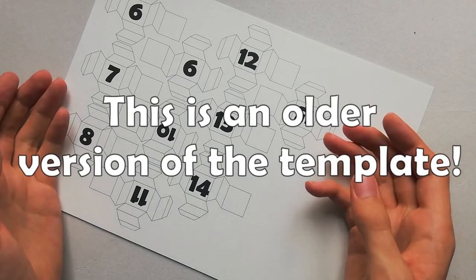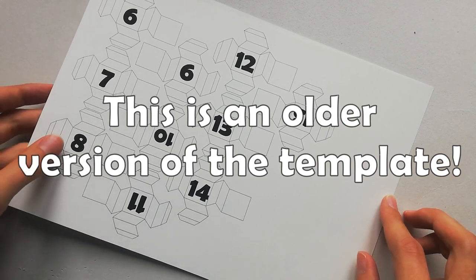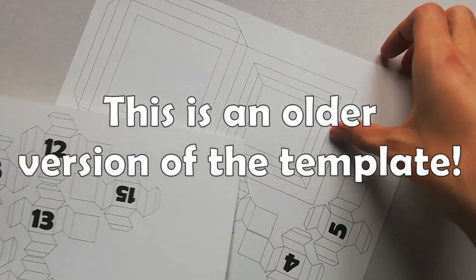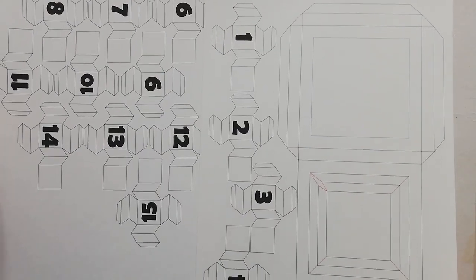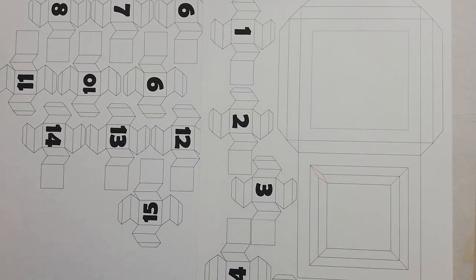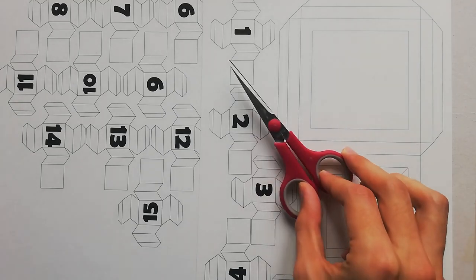I'd recommend you printing the puzzle on paper with 120 to 180 grams per square meter. Like that the puzzle is much more stable than if you'd build it with regular printing paper. After you printed the pieces you can cut out everything.